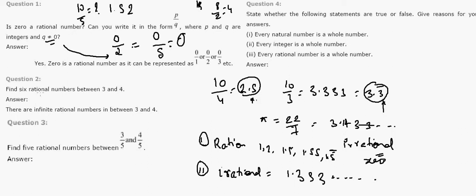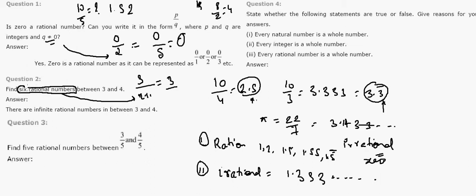Next problem: find 6 rational numbers between 3 and 4. Whenever you need to find rational numbers between two values, multiply and divide by n plus 1. We are looking for 6 rational numbers, so we use 6 plus 1, which is 7. Multiply 3 by 7 over 7 to get 21 by 7.